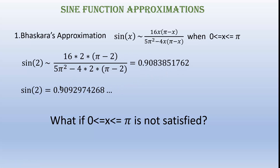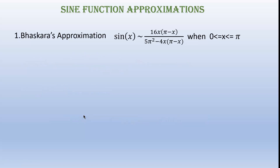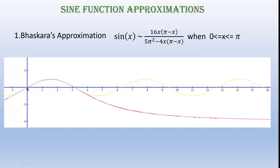But there is also a drawback for Bhaskara's approximation: it does not work whenever the value of x is not in the range 0 to pi. So what if this condition is not satisfied? The real sine curve is shown by the yellow color, and the Bhaskara's approximation function goes like this. It is clear from the curve that Bhaskara's approximation is only good in the 0 to pi range — you can see these two curves almost overlapping with each other in that range.